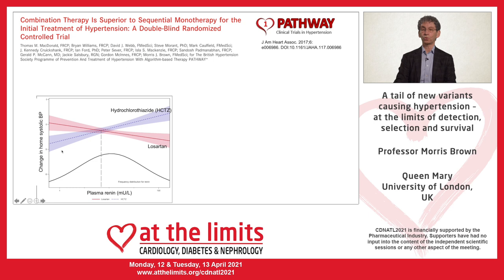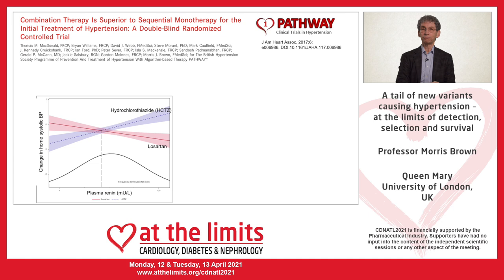Using the concept of the distribution of renin, we can demonstrate the shift from the start of treatment to development of resistance. Looking at data from one of three trials conducted with colleagues in the British Hypertension Society, we plot the fall in blood pressure against patients' plasma renin when treated in random order with an angiotensin blocker and then a diuretic. Those at the left of the renin distribution respond better to a diuretic; those at the right respond better to an angiotensin blocker — and the crossing point is to the left of the median, telling us most untreated hypertensives have renin-driven rather than salt-dependent hypertension.